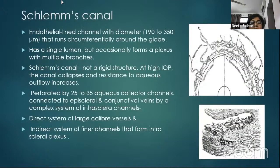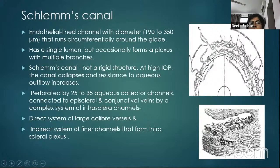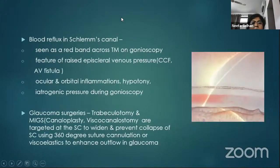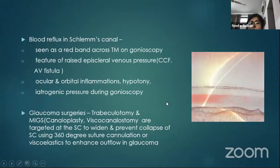Schlemm's canal is an endothelial-lined channel with a diameter of about 190 to 350 microns that runs circumferentially around the globe. It has a single lumen, but occasionally it can form a plexus. It is perforated on the outer aspect by 25 to 35 aqueous collector channels, which drain to the episcleral plexus by a complex system of intrascleral channels. Clinically, blood reflux in Schlemm's canal is an important feature of raised episcleral venous pressure, seen in carotid-cavernous fistula and AV fistula, appearing as a red band across the trabecular meshwork on gonioscopy. Knowledge of Schlemm's canal anatomy is also important for glaucoma surgeries like trabeculotomy, canaloplasty, and viscocanalostomy.